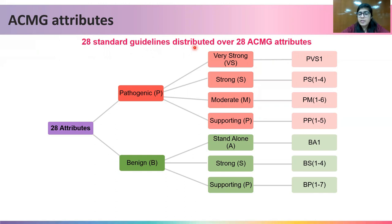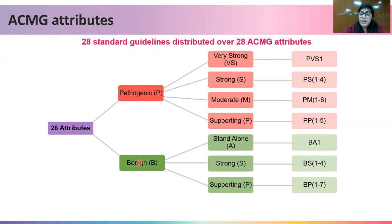These 28 standard guidelines are distributed over 28 ACMG attributes classified as pathogenic or benign. In the case of pathogenic, they can be very strong, strong, moderate, and supporting evidences. In the case of benign, they can be standalone, strong, or supporting. Each of these evidences has respective attributes that you have already learned in the previous sessions.